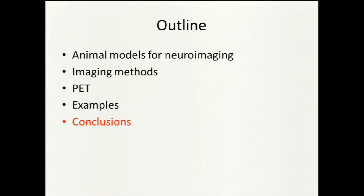In conclusion, animal models are good because they allow experimental control and manipulations not possible in human studies. Non-invasive imaging of the brain is good because it lets us do longitudinal studies where the animal acts as its own control. Methods like MRI and PET, to the extent they work in animals, can be transferred to humans. And when we do animal imaging, it's good if there's some other variable being measured — for instance, behavior. Thank you.